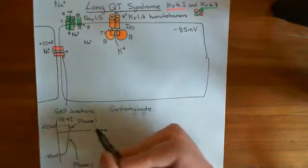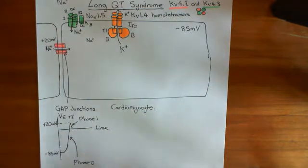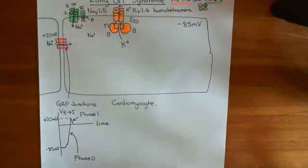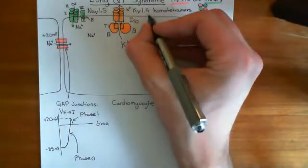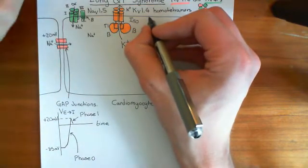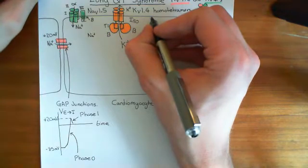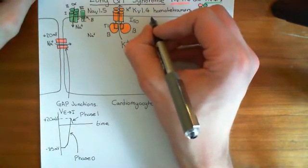This transient outward current is responsible for phase one of the cardiac action potential — that small blip in the waveform. The next important channels are the L-type voltage-gated calcium channels. To understand the next portion of the action potential, we also need to look at the delayed rectifier potassium channels.